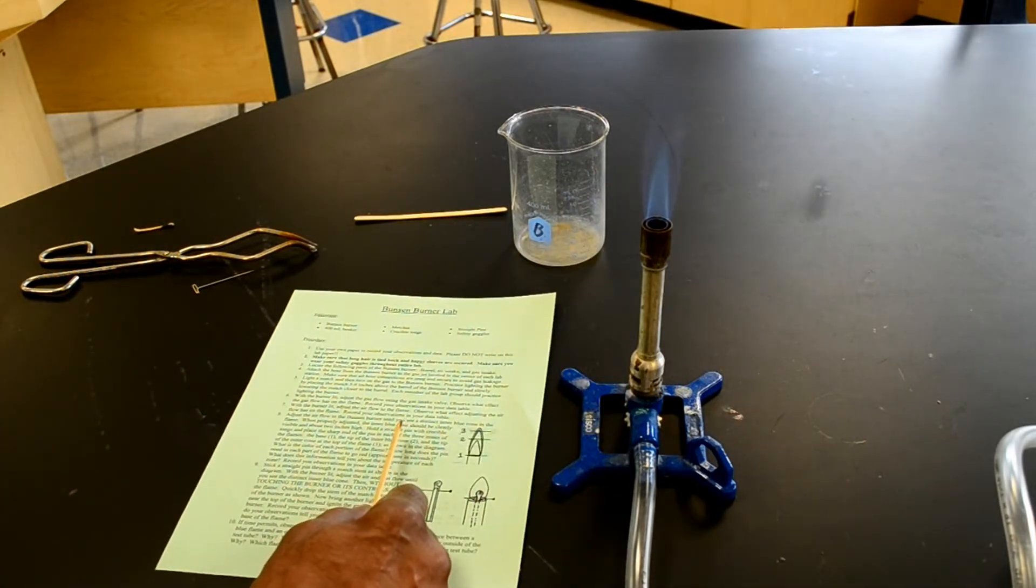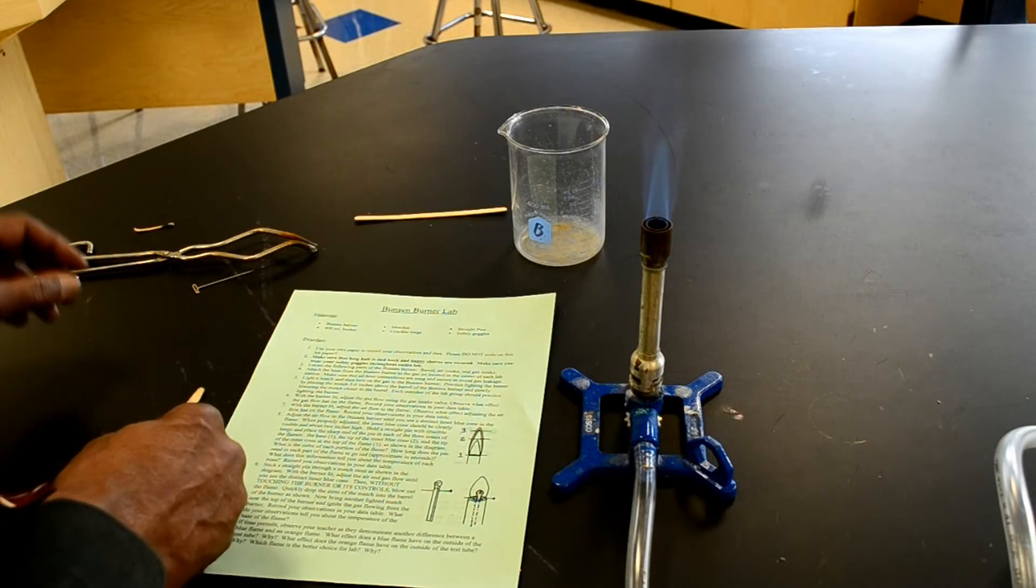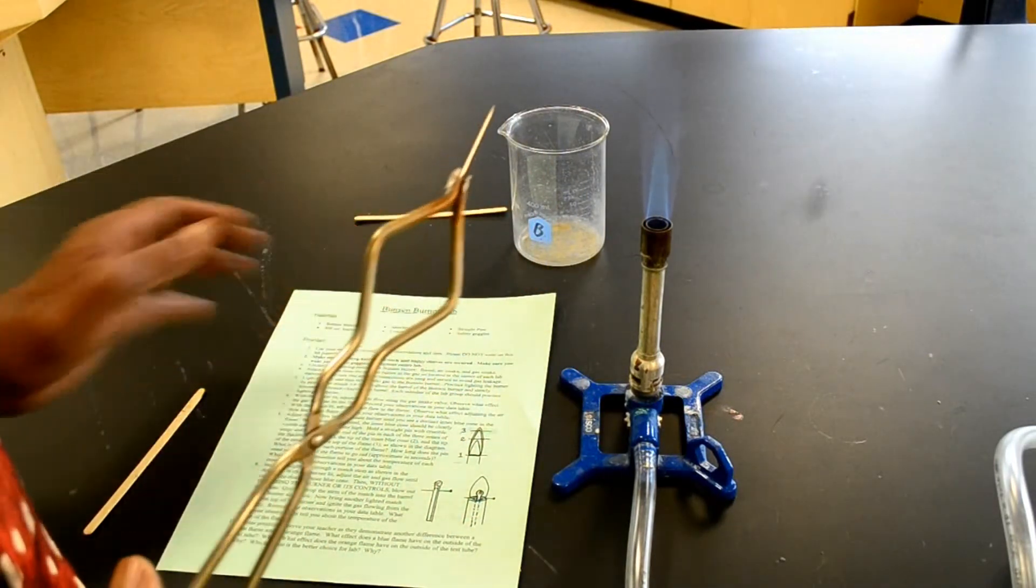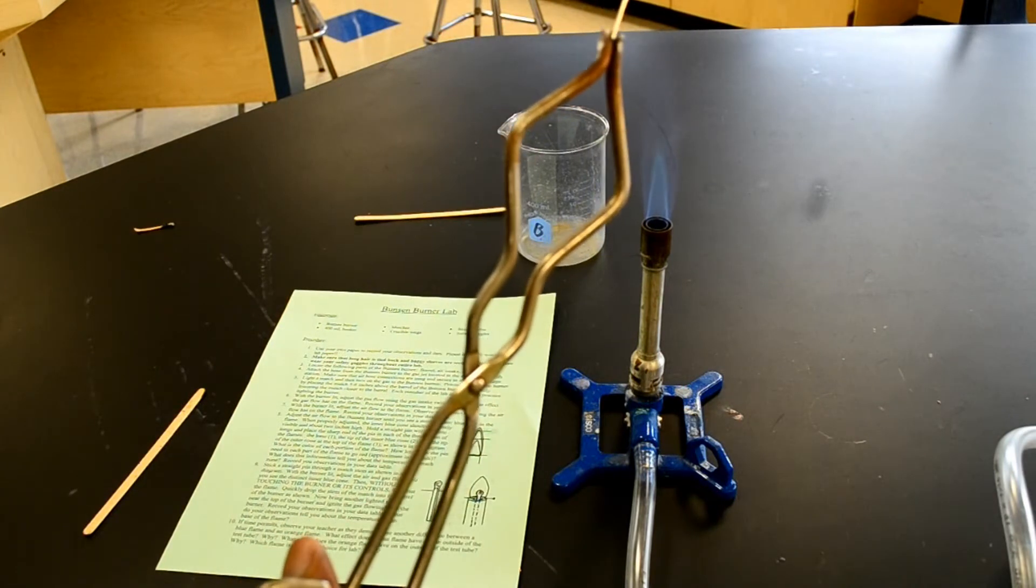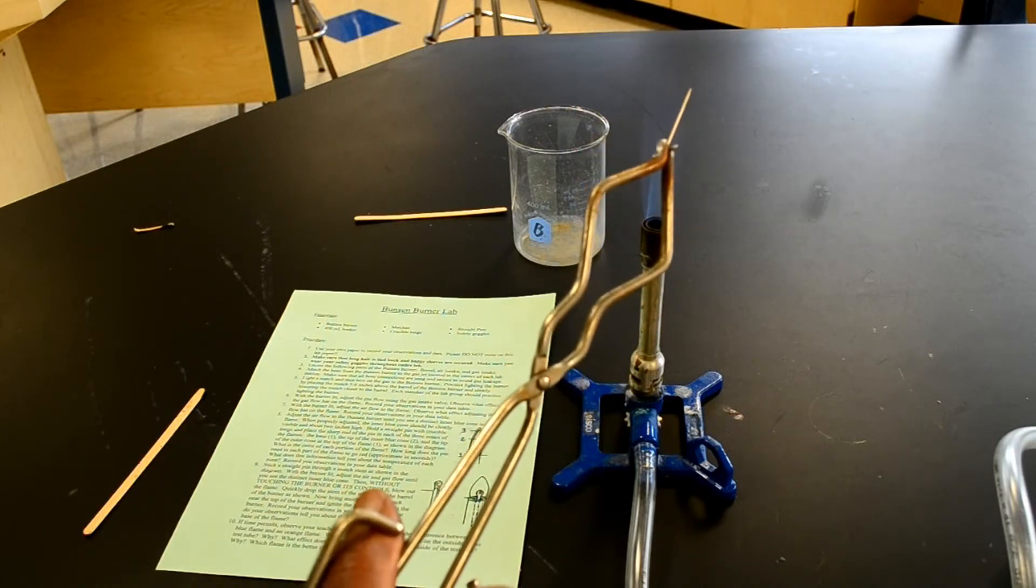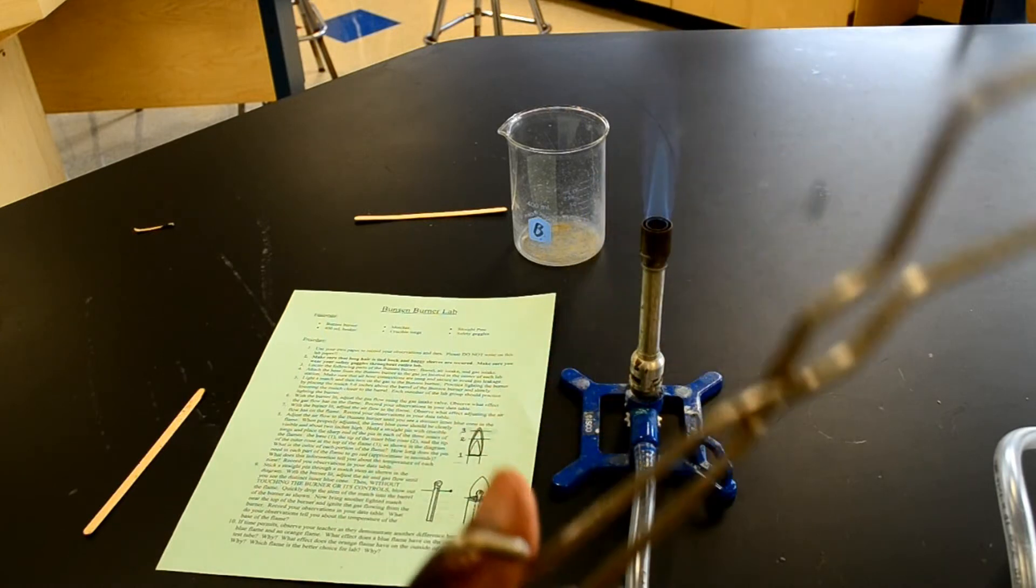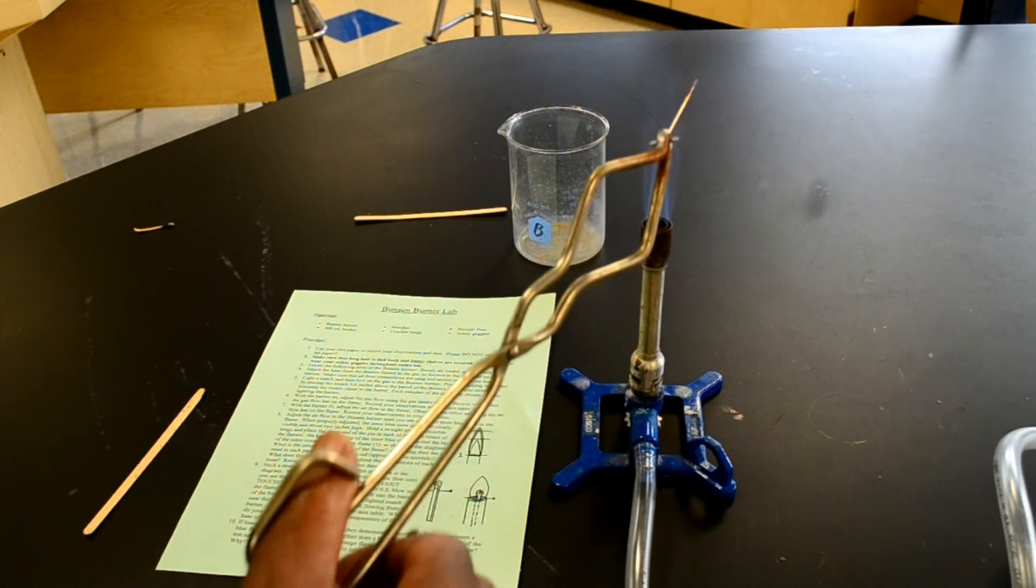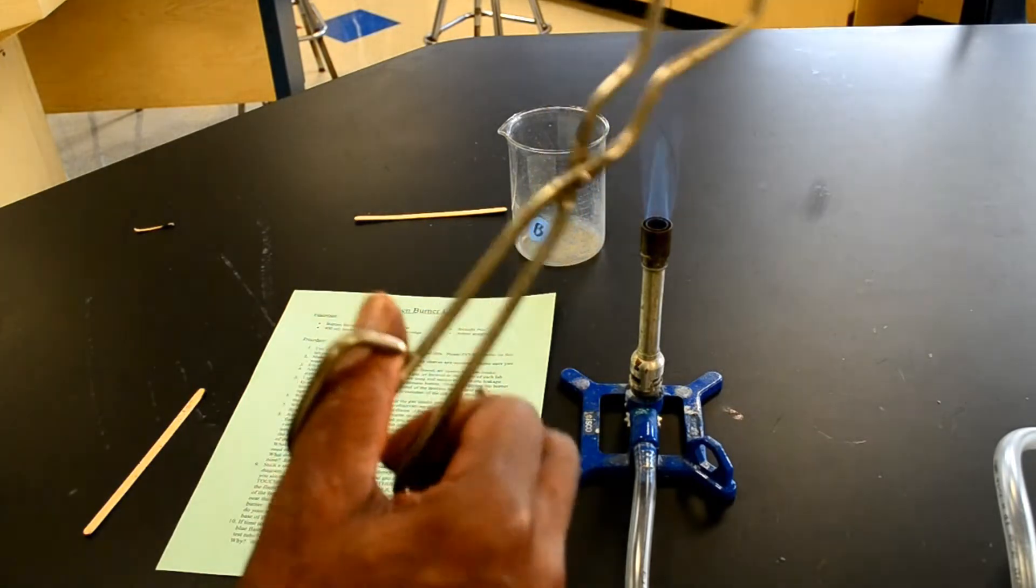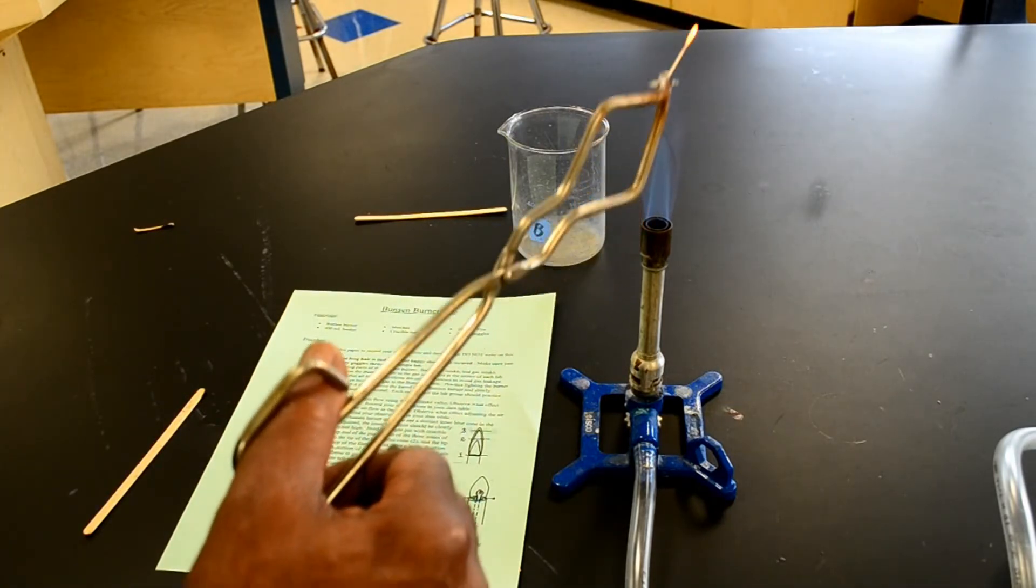Hold a straight pin with crucible tongs and place the sharp end of the pin in the three zones of the flame. Crucible tongs here. Pin here. I'm going to take the crucible tongs. First, I'm going to place it in the base. The base is there. Then I'm going to place it in the tip of the inner cone. And you can see it's getting really red now, so that must be the hot part. The hottest part of the flame so far is the tip of the inner cone and then the tip of the outer cone. That's the outer cone where it gets red again, but the tip of the outer cone is not as hot as the tip of the inner cone.